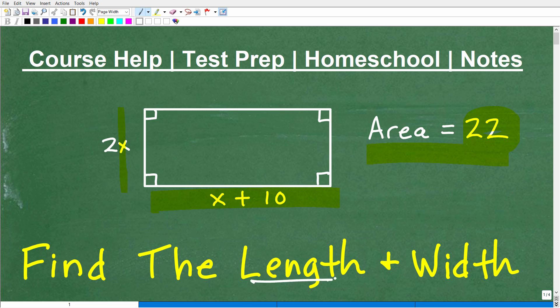And we have the dimensions. We have the length here being x plus 10 and the width being 2x. So what we want to find is the actual length and width. A very typical type of algebra problem.